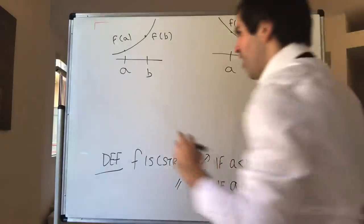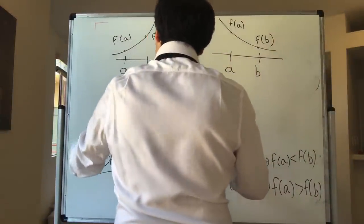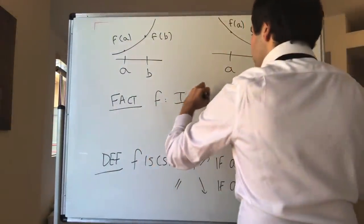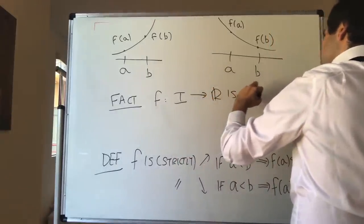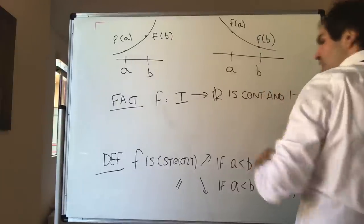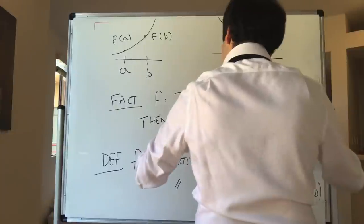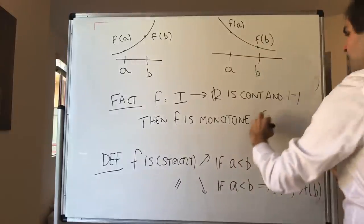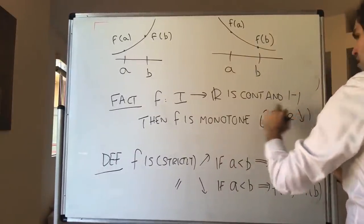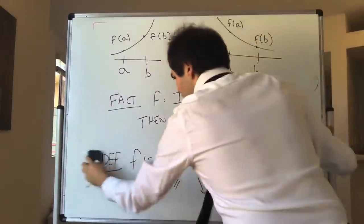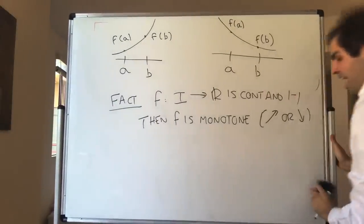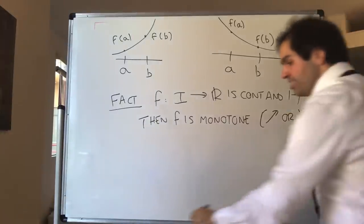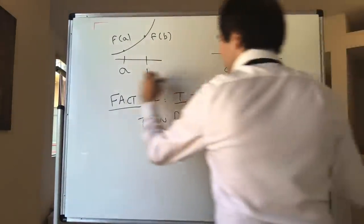As promised, I want to show you the following fact. If f from I — where I is any interval in the real numbers — to ℝ is continuous and one-to-one, then f is monotone, meaning monotone just means increasing or decreasing. And here's a little application: you can quickly check for increasing or decreasing without even using derivatives. That's kind of cool.